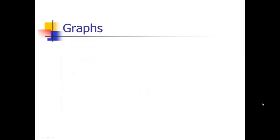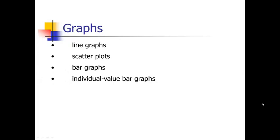Graphs — we could have a whole course on graphs, but I'm going to give you the eight-minute version here. There are many different ways to represent data graphically, and you really need a whole course on data visualization to do justice to this topic. The most common types include line graphs, scatter plots, bar graphs, individual bar graphs, histograms, box plots, and survival curves. If you're going to be writing a lot of scientific manuscripts, the figures are so important that you really do want to train yourself well on data visualization — it's becoming more and more important, especially now that you can have colors in online manuscripts.